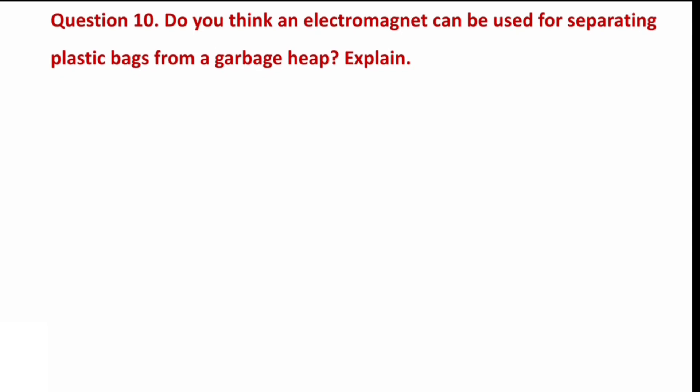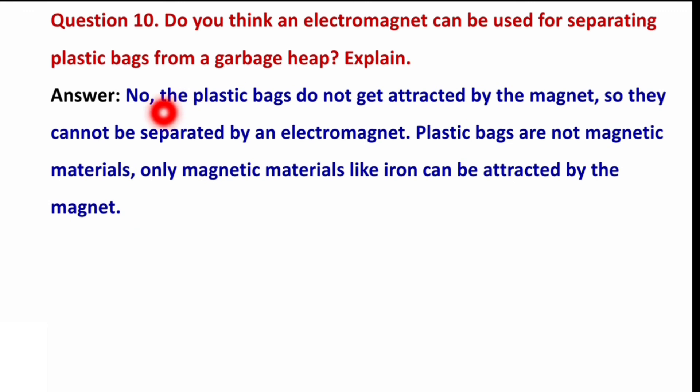Next question: do you think an electromagnet can be used for separating plastic bags from a garbage heap? Explain. The answer is no — plastic bags are not attracted by the magnet so they cannot be separated by an electromagnet. Plastic bags are not magnetic materials. Only magnetic materials like iron can be attracted by a magnet. So it is not possible to use an electromagnet to separate plastic bags from the garbage heap.